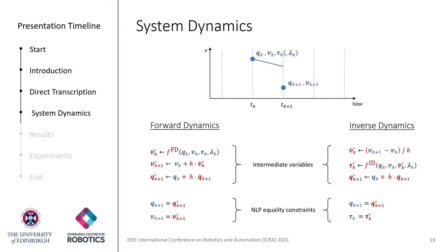In this slide, we can see the intermediate variables required for each approach, and the NLP constraints that must be specified in the problem formulation. After transcribing the rest of the optimization problem, we can pass it to an optimization library. During optimization, solvers perform a numerical search to find the most suitable values for the decision variables. Importantly, while doing so, they also ensure that the trajectory represented by those decision variables respects the equality constraints that enforce dynamic consistency.